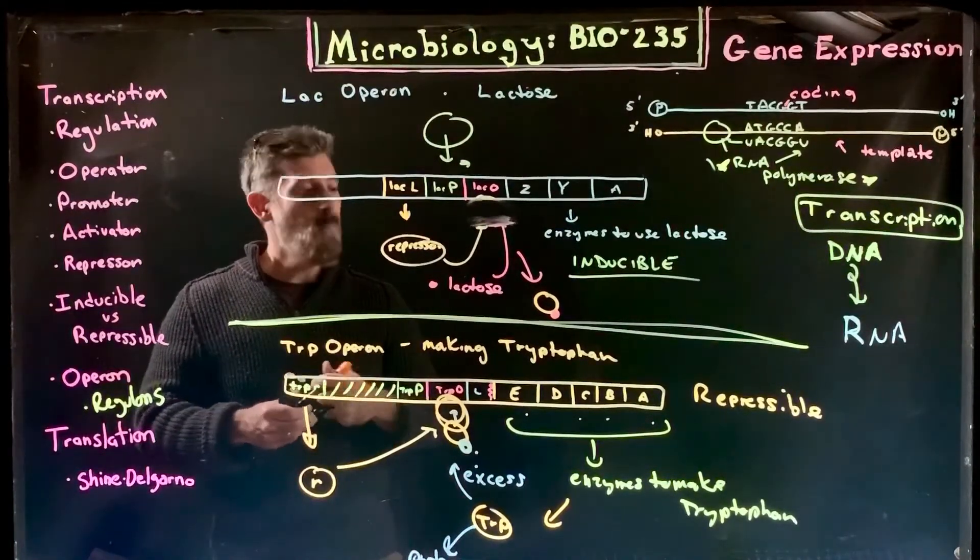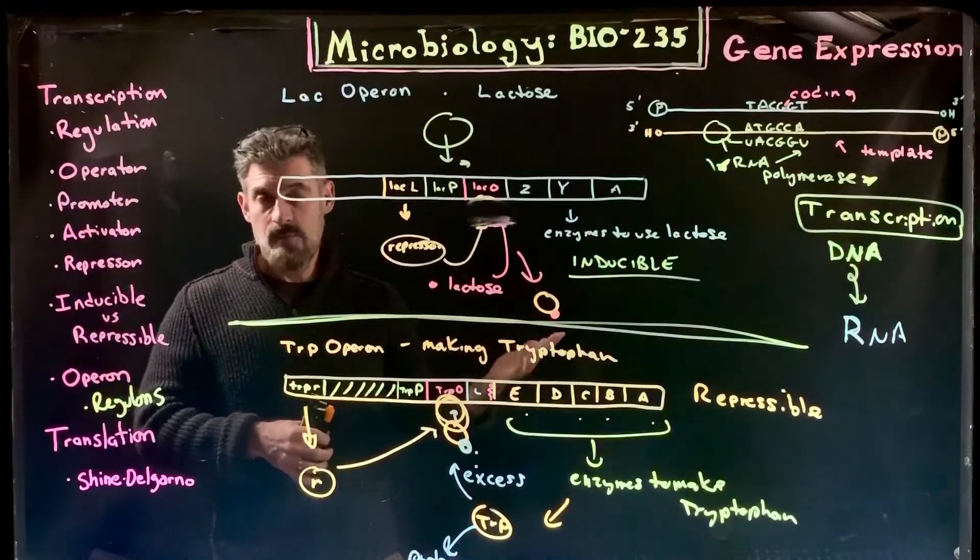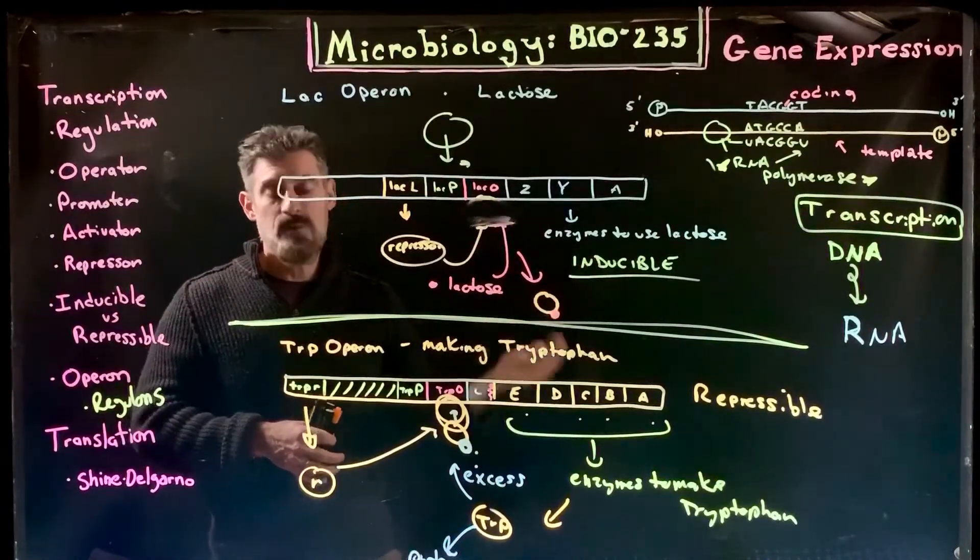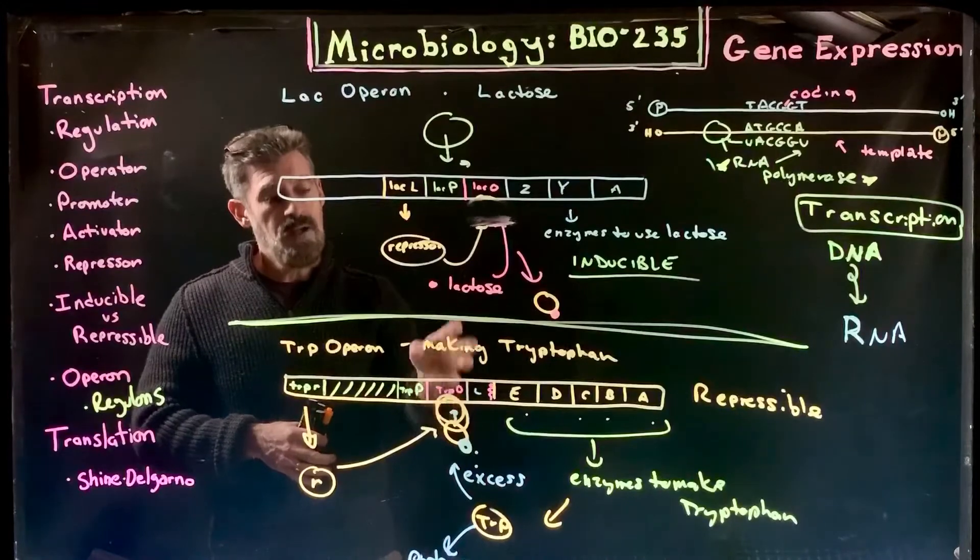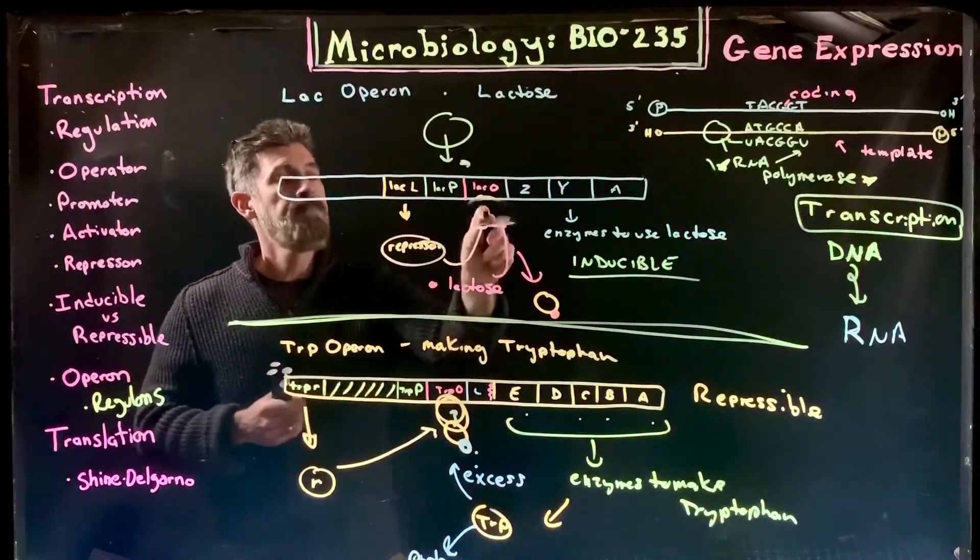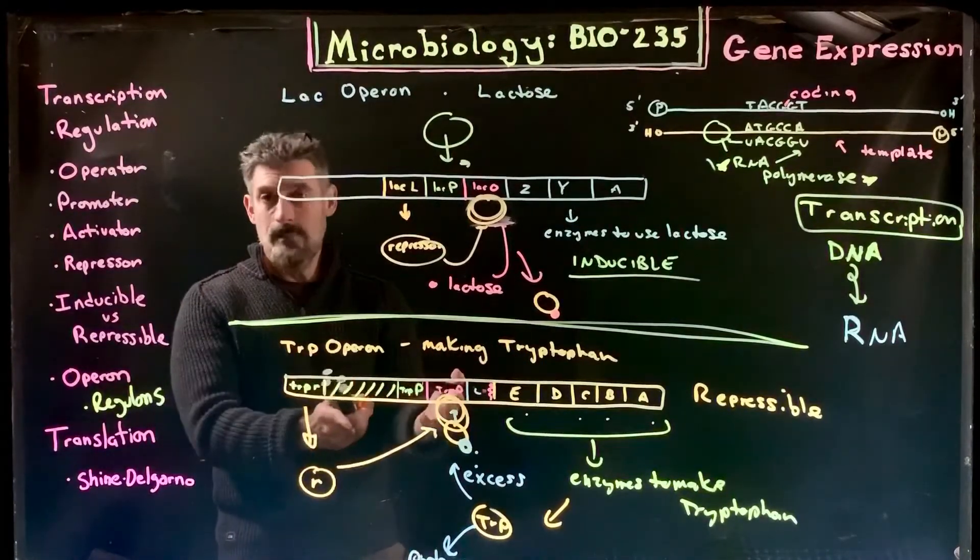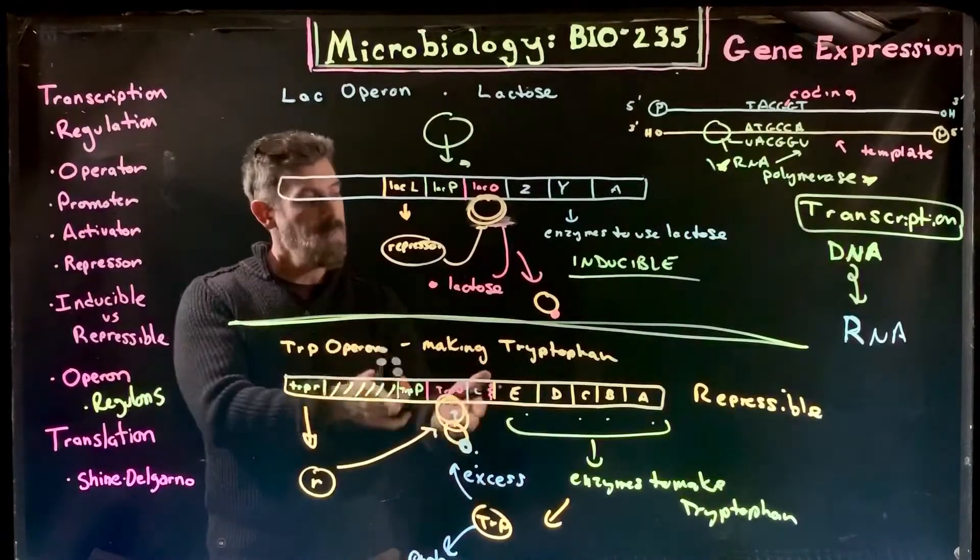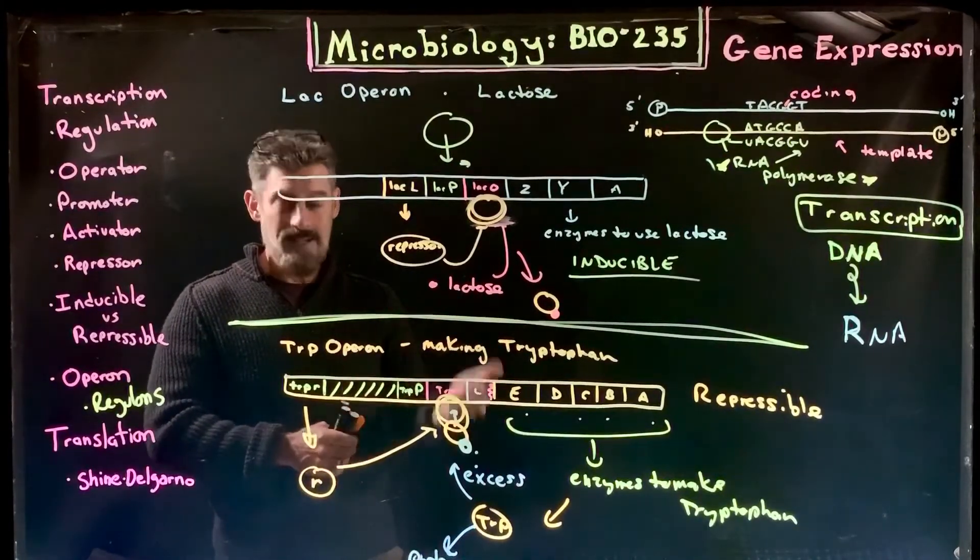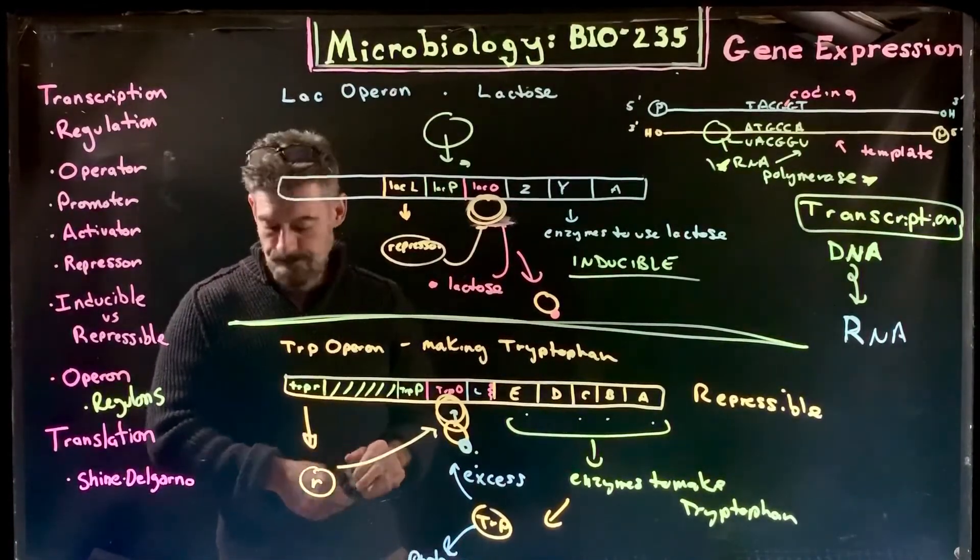There are more details we could go into, but you don't need to know the names of specific proteins or enzymes. It's more the overall concept that this is one way cells regulate gene expression at the level of using an operator and repressor proteins. They can either be there all the time, shutting it down and then removed, or be around but unable to bind until told to bind. Use these as your examples: the TRP operon as the repressible system, and the LAC operon as the inducible system.